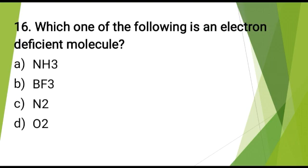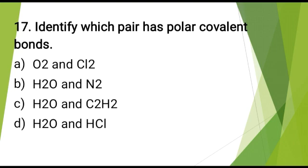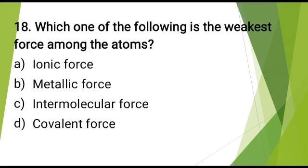Which one of the following is an electron deficient molecule? The correct answer is: BF₃. Identify which pair has polar covalent bonds? The correct answer is: H₂O and CHCl. Which one of the following is the weakest force among the atoms? The correct answer is: intermolecular force.